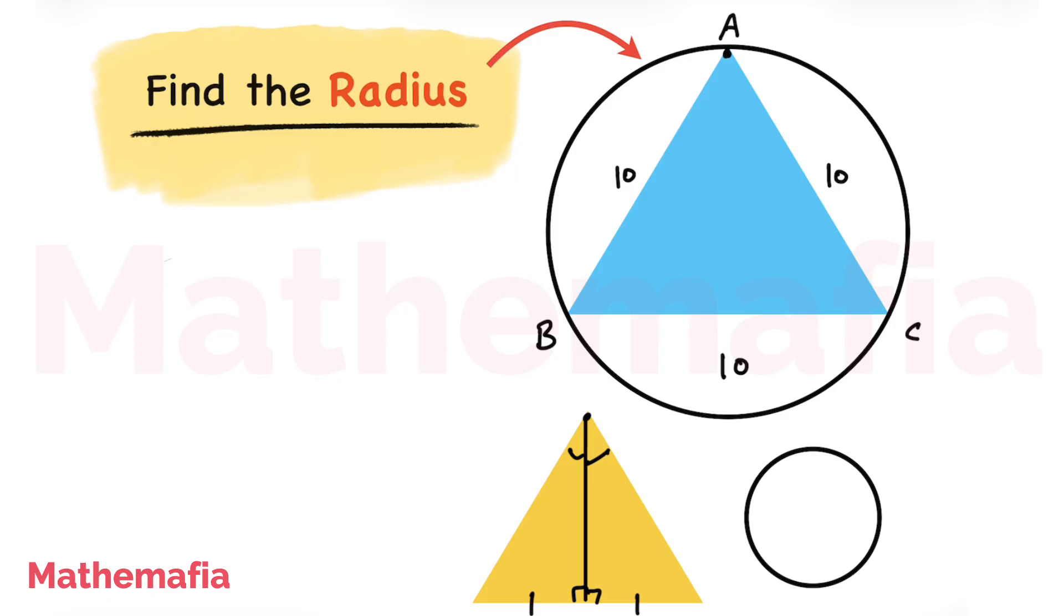So let's draw a perpendicular from vertex A on side BC of this triangle. Let's call this point D. This means BD will be 5 and DC will be 5 as well. Also, this angle and this angle will be equal, which means this angle will be 30 degrees and this angle will be 30 degrees as well, because this angle is 60 degrees in an equilateral triangle.